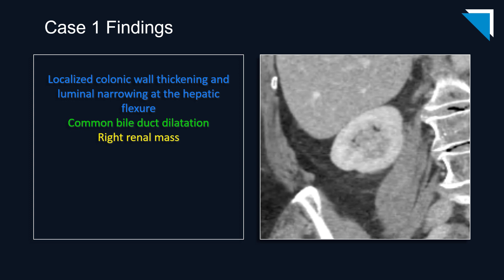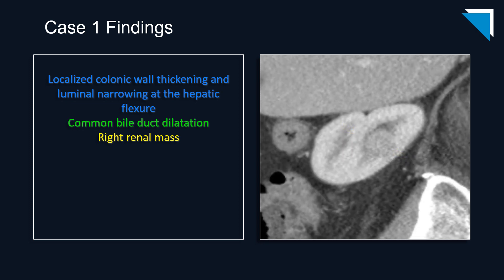The finding is frankly even more subtle on the coronal images, and perhaps a bit less so on the sagittal reformatted images. This case really underscores the importance of sticking to your search pattern and not becoming distracted once you've made important findings — and also to utilize the coronal and sagittal reformatted images in every case, and request them if you don't have them.